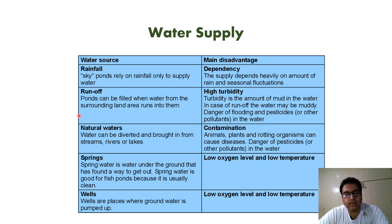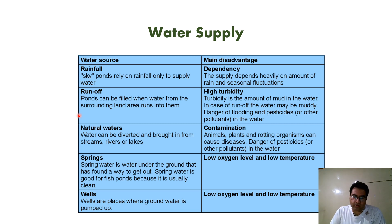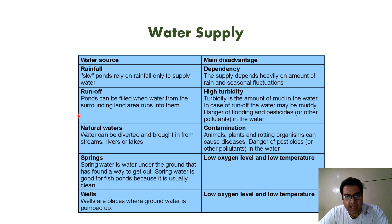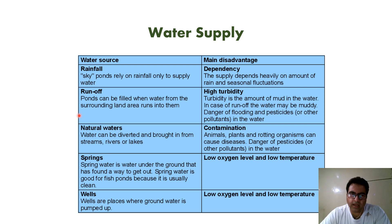The third important criteria is the supply of water. When topography and soil are good, we consider what the supply of water should be and how to get a good and cheap supply. We have different kinds of sources: rainfall, runoff, natural water such as springs, wells, tube wells, a nearby reservoir, a pond, or a lake.